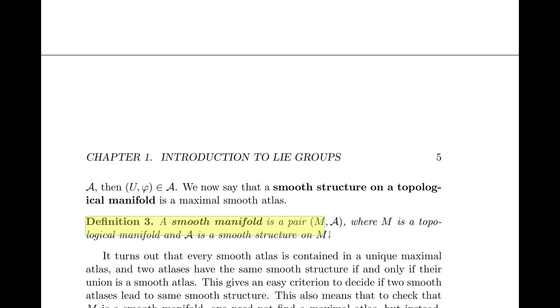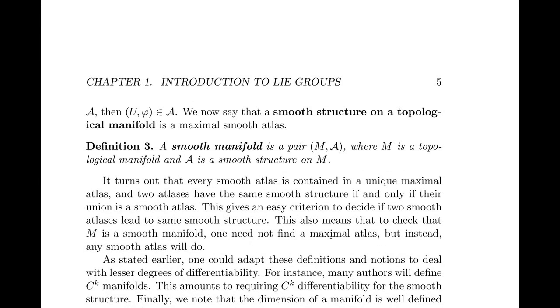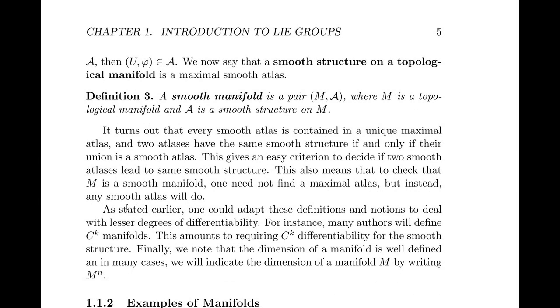Now, using this, we can define a smooth manifold to be a pair (M, A), where M is a topological manifold and A is a smooth structure in the sense that we just defined. It turns out that every smooth atlas is contained in a unique maximal atlas, and two atlases have the same smooth structure if and only if their union is a smooth atlas. So this gives an easy criteria to decide if two atlases lead to the same smooth structure. This also means that to check that M is a smooth manifold, we need not find a maximal atlas. Instead, we need only find a smooth atlas.